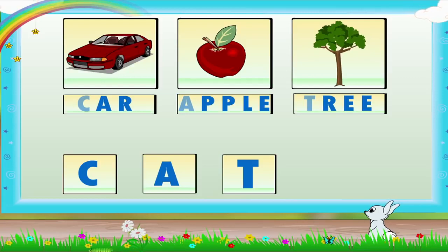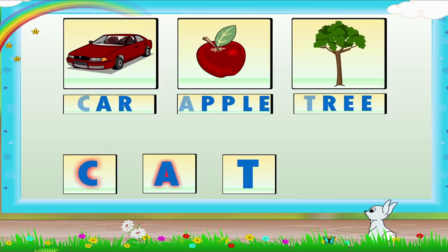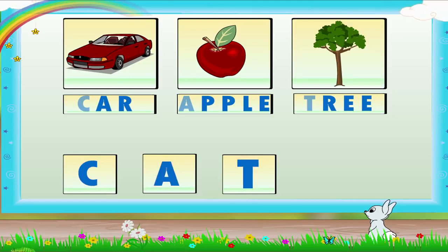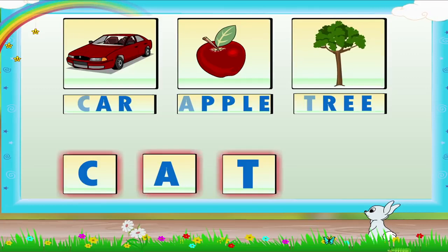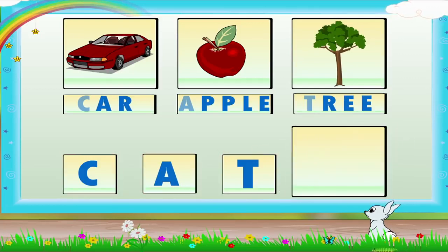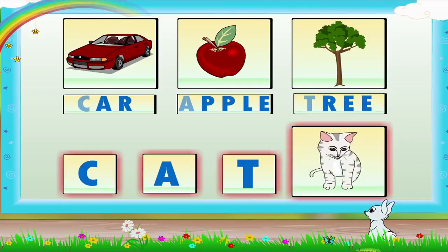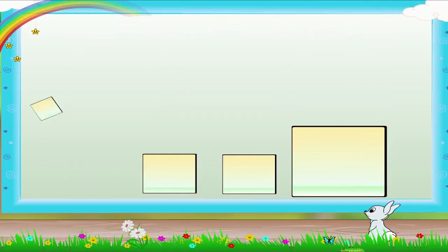Now, read the letters in the squares: C, A, T. Can you say which new word is formed with the letters placed in the square? Cat! Very good!